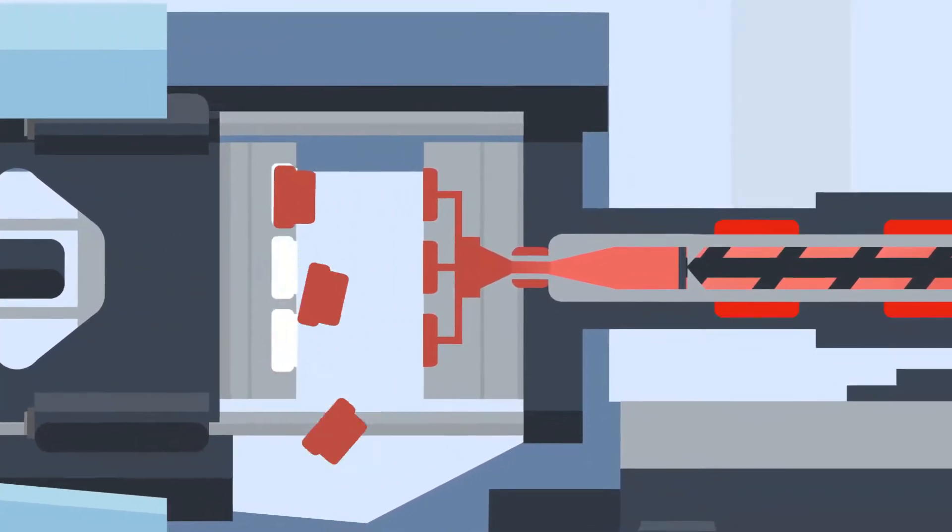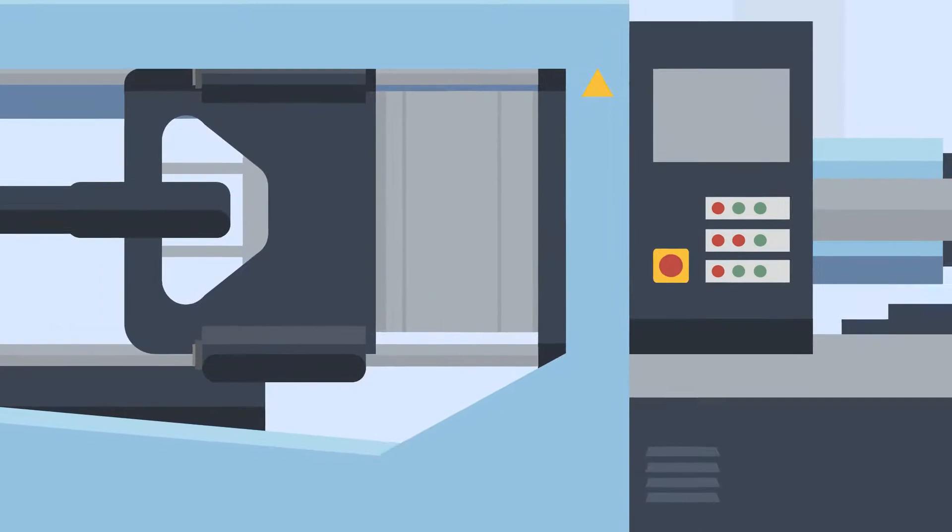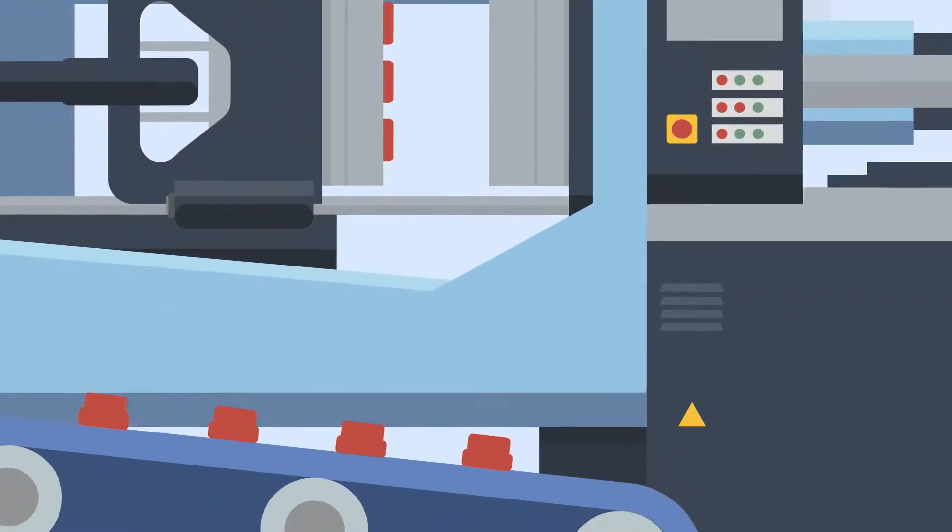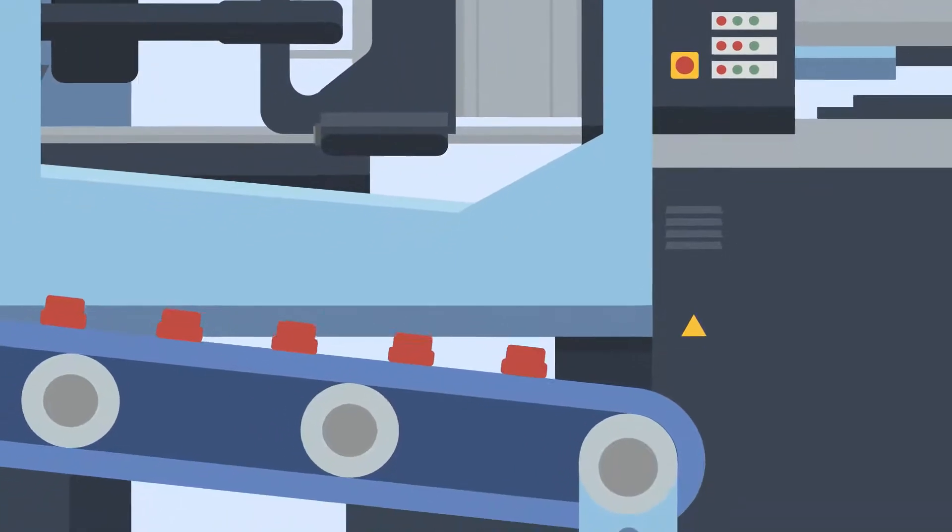Once the set cooling time has passed, the mold opens and ejector pins or plates push the new parts out of the tool. These then fall onto a conveyor belt ready to be finished and packed.